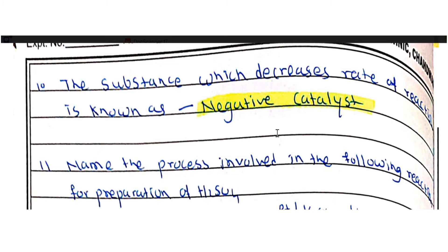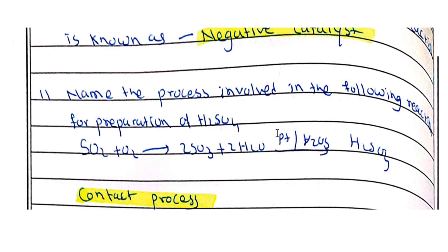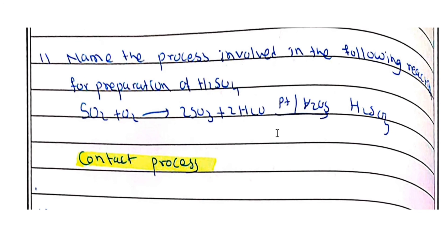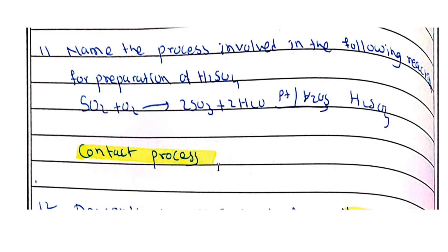Carbon monoxide acts as a catalytic inhibitor in Haber's process. A substance which decreases the rate of reaction is known as a negative catalyst. For the preparation of H2SO4, platinum and vanadium pentoxide act as catalysts, and this process is known as the contact process.